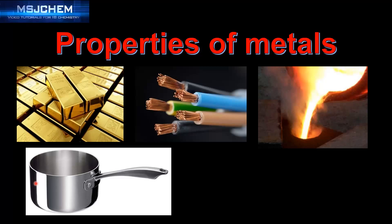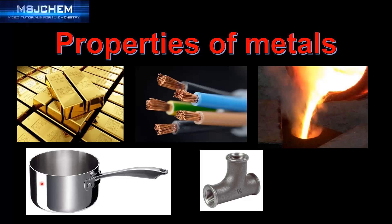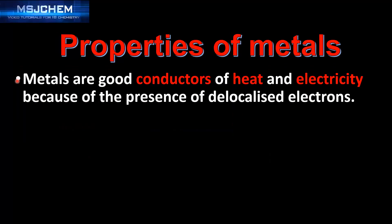Metals are good conductors of heat and they are malleable — that means they can be bent into shape. Metals are good conductors of heat and electricity because of the presence of delocalized electrons.